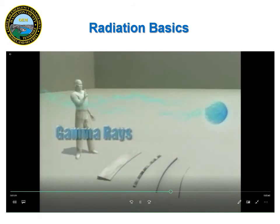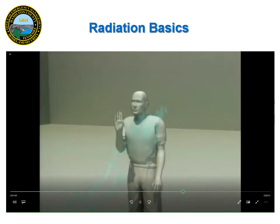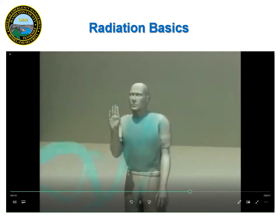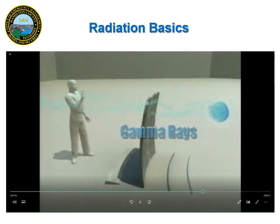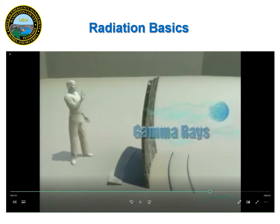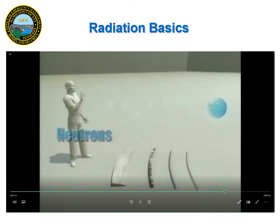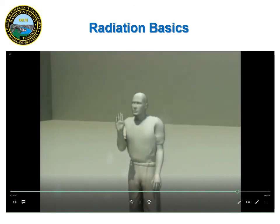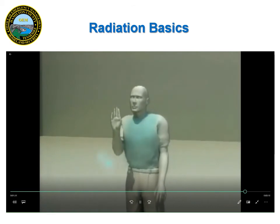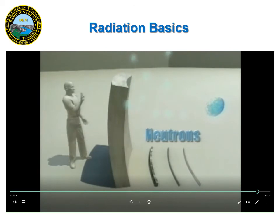Gamma rays, the most energetic part of the electromagnetic spectrum, can be emitted from the nucleus during radioactive decay. They are able to travel tens of yards or more in air and easily penetrate the human body. Shielding this penetrating type of radiation requires thick, dense material such as several inches of lead or concrete. Neutrons can be released from the nucleus of an atom during a fission reaction, such as within a nuclear reactor or upon detonation of a nuclear weapon. Neutrons, like gamma rays, are very penetrating and several feet of concrete is needed to shield against them.